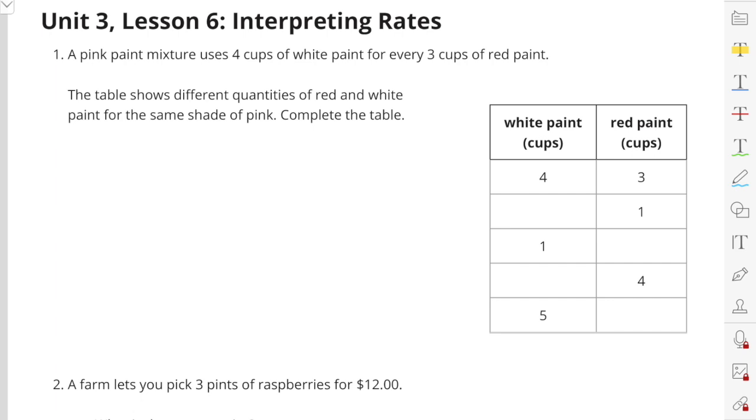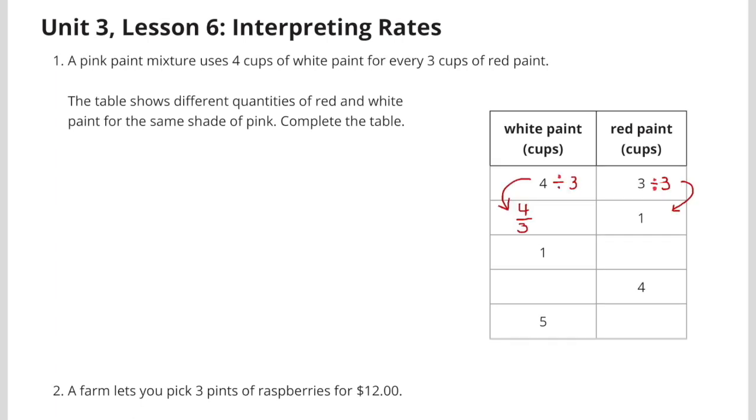Unit 3, Lesson 6, Interpreting Rates. Number 1. A pink paint mixture uses 4 cups of white paint for every 3 cups of red paint. The table shows different quantities of red and white paint for the same shade of pink. Complete the table.